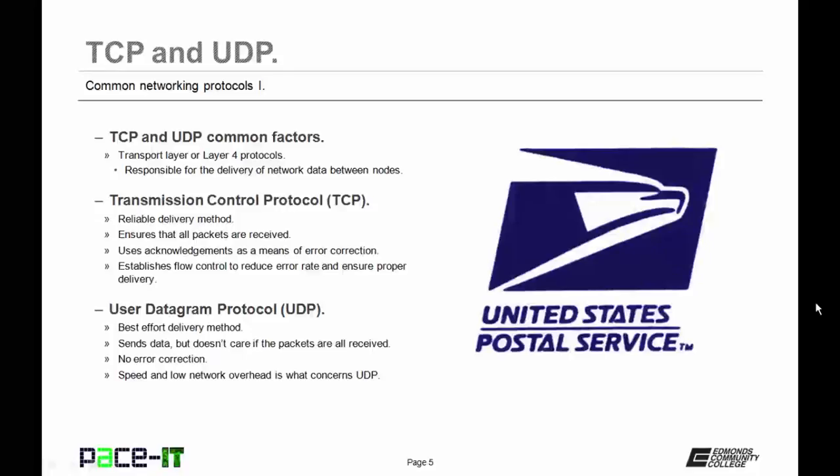On the other hand, UDP uses a best effort delivery method. It sends data but doesn't care if the packets are all received. There is no error correction, and with UDP, speed and low network overhead are the major concerns, not the reliable delivery of the information.